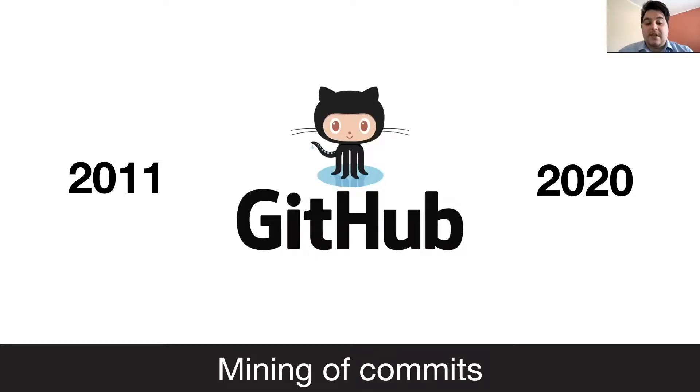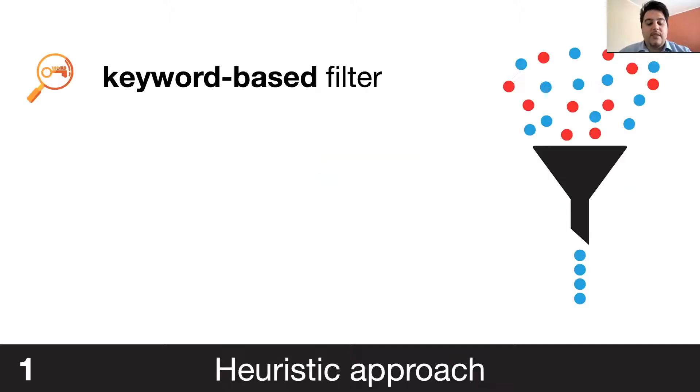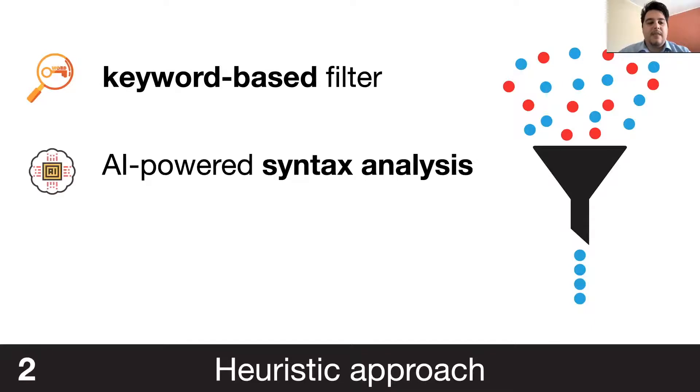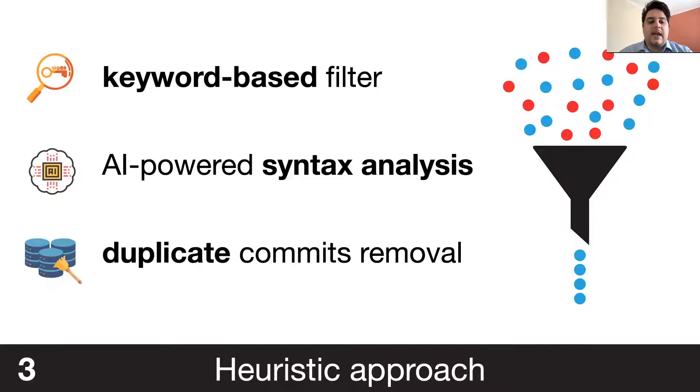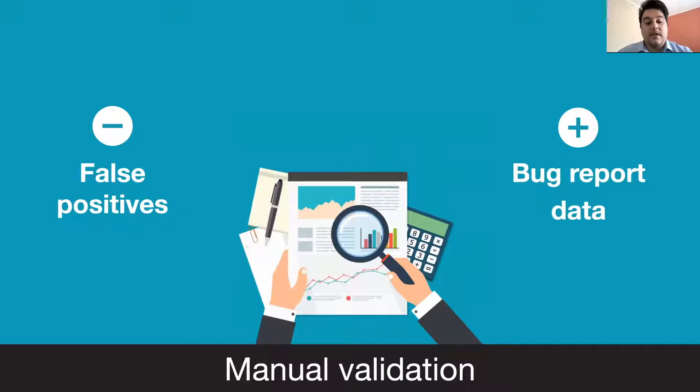So, how we build the dataset? First, we perform a mining of the commits from GitHub, starting from 2011 to 2020. Then, a heuristic approach is applied, where first, a keyword-based filter is used. Then, a syntax analysis using AI is performed, and at the end, the duplicate commits are removed. After this, we perform a manual validation on the obtained commits to remove false-positives and add bug report data.